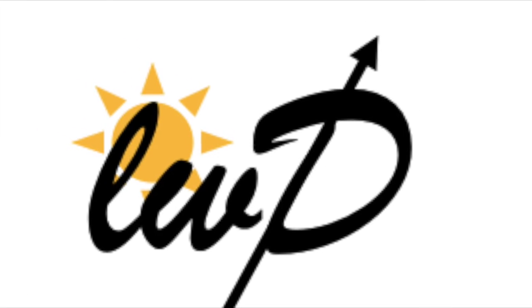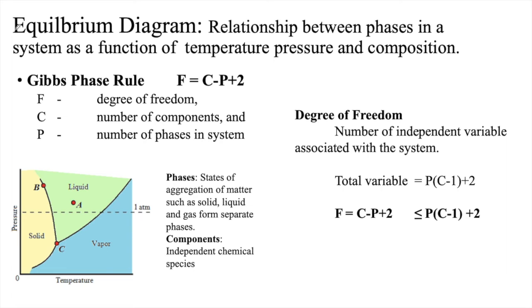Welcome to Learn with Dina. Equilibrium Diagram: the relationship between phases in a system as a function of temperature, pressure, and composition.